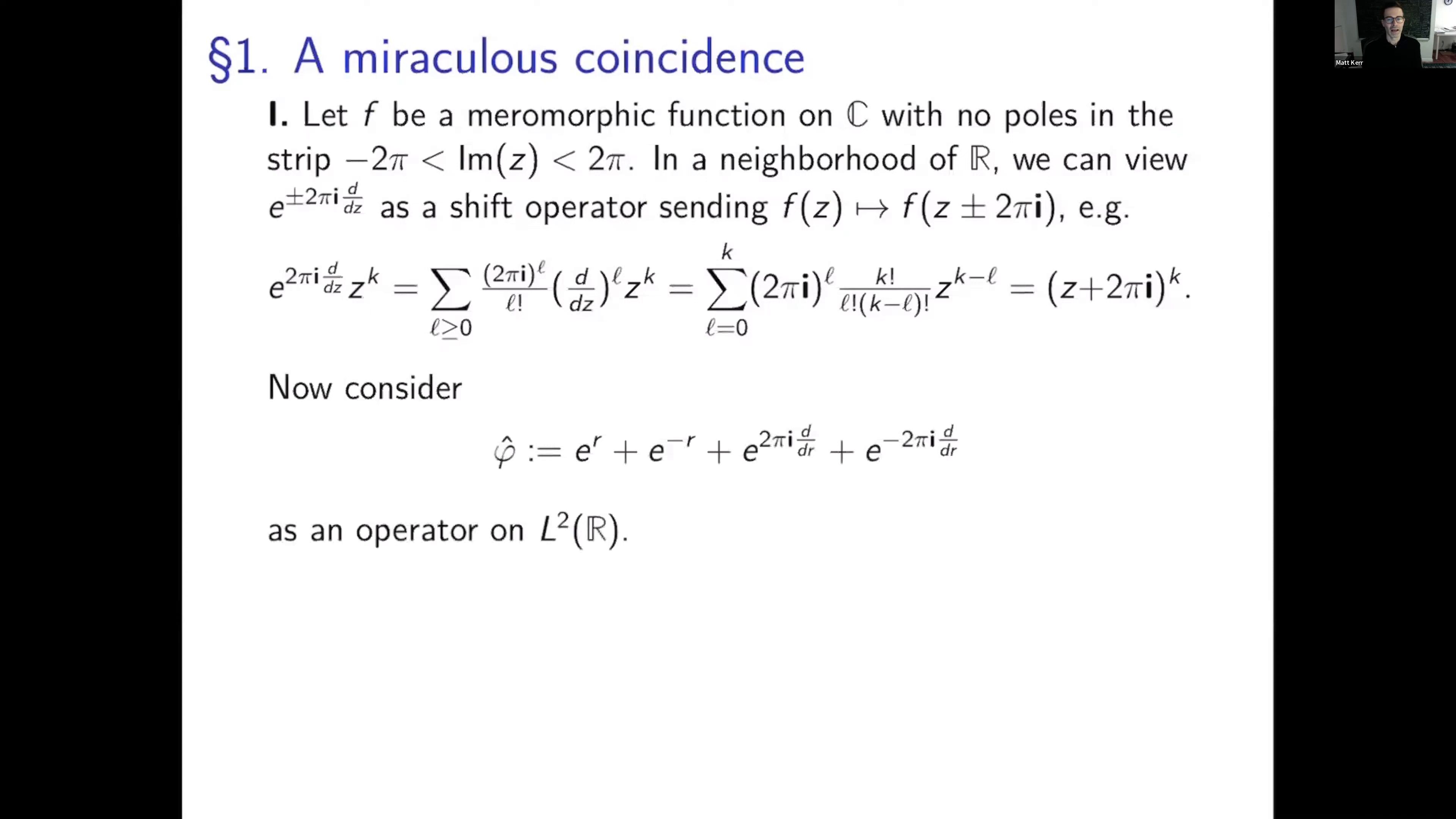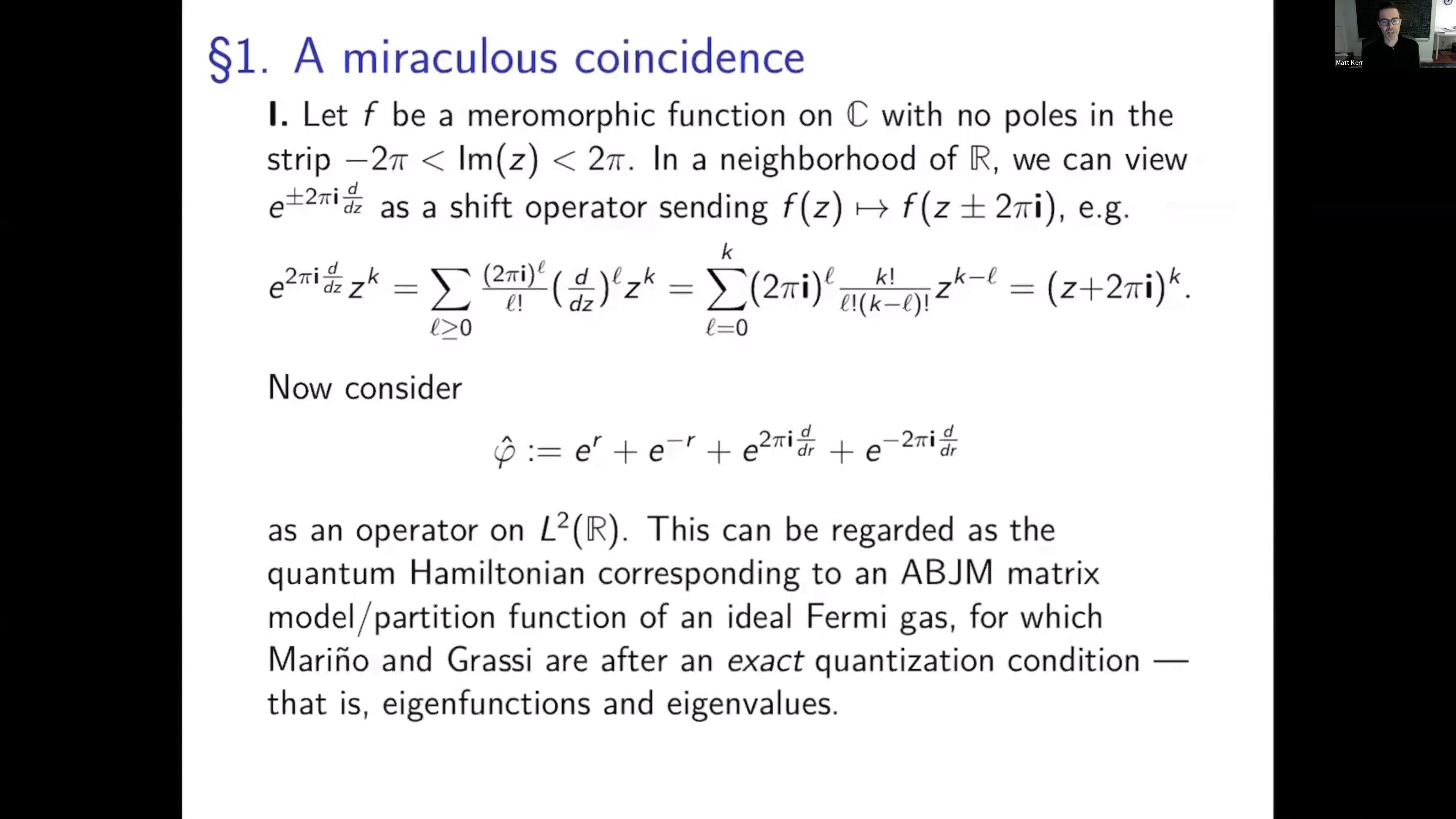But now let's consider something more complicated. We can consider this sum of two such shifts together with multiplication operators, multiplication by e to the r and by e to the minus r. You sum it all together and think of that as an operator on L2 of R. This has motivation from physics that was considered by Mourinho and Grassi as the quantum Hamiltonian corresponding to a matrix model for ideal Fermi gas.